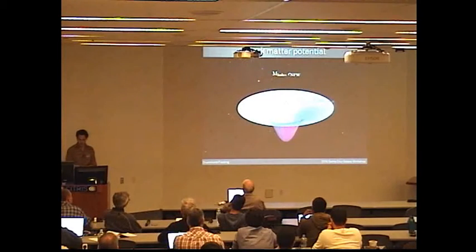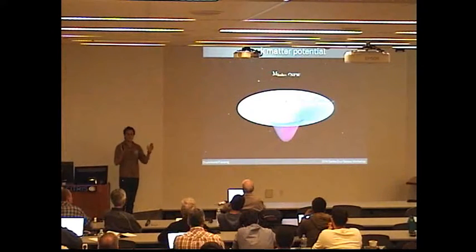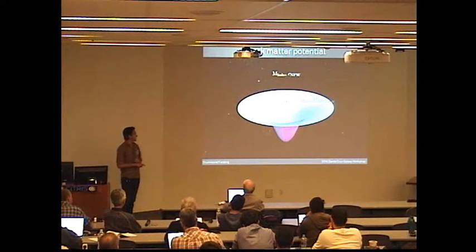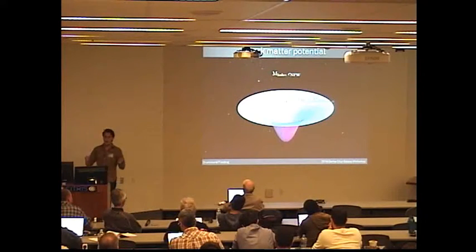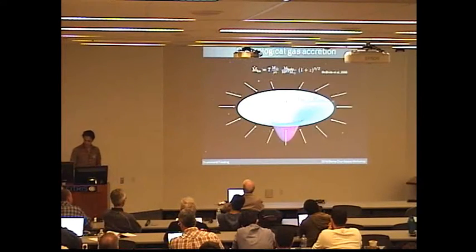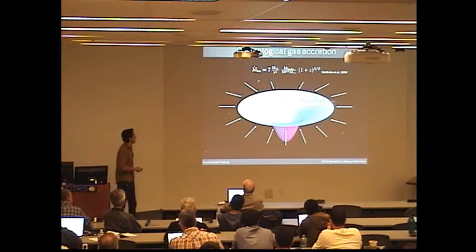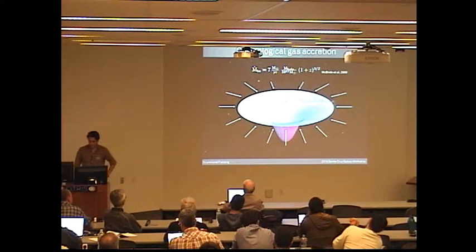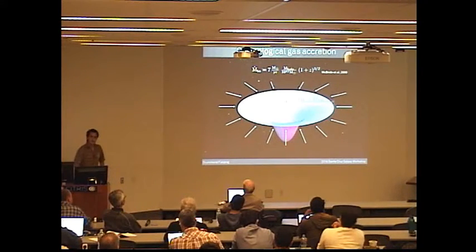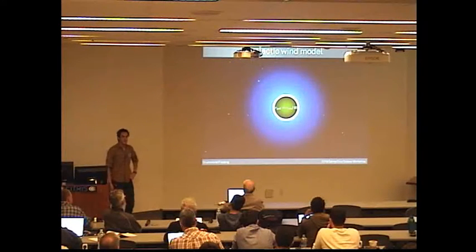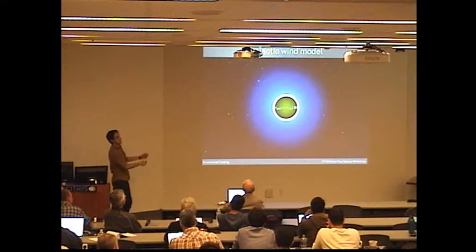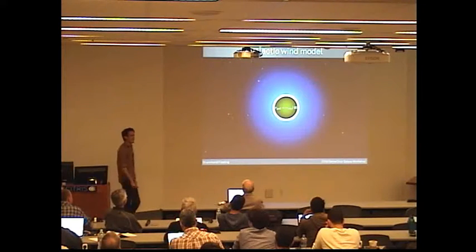So our setup is as follows. We have a dark matter potential that is fixed in time and extends out to twice the virial radius, which is the outer boundary of our domain. We then feed in gas at some rate that we calibrated to cosmological simulations, which we can also play around with a little bit. And then we also have an inner domain, and this is where the idealized nature of our simulations becomes really clear. This is our galaxy.